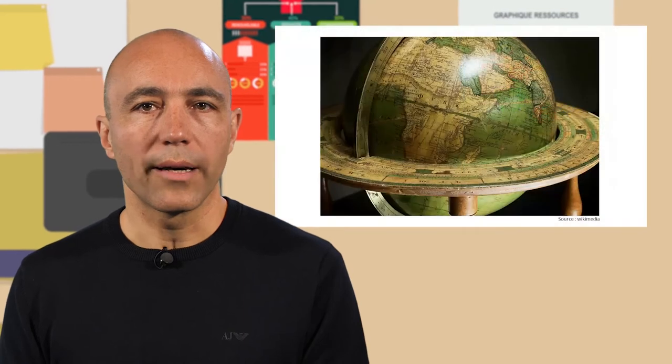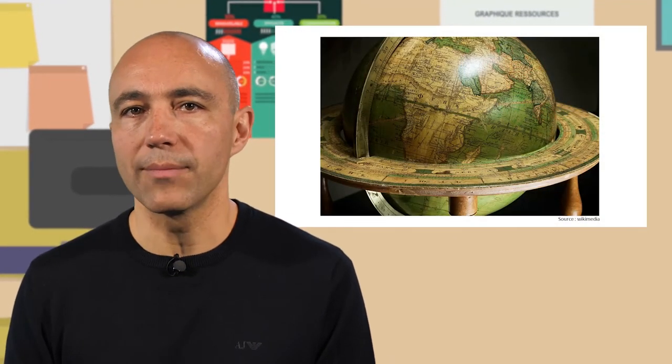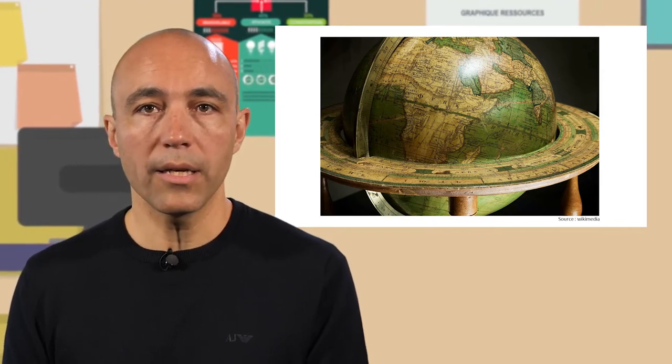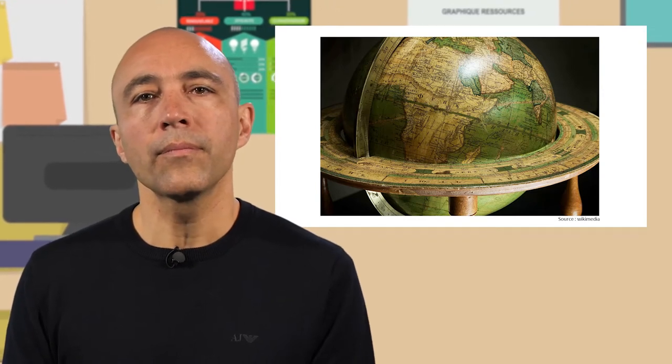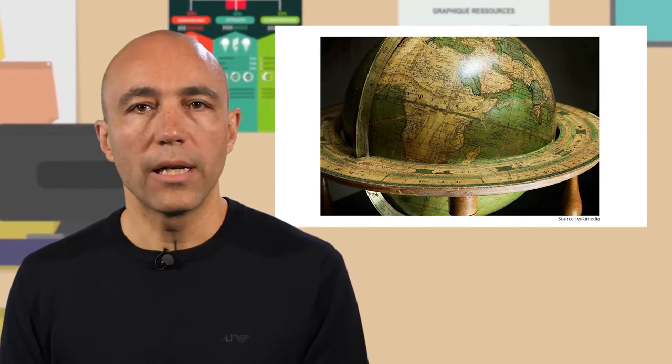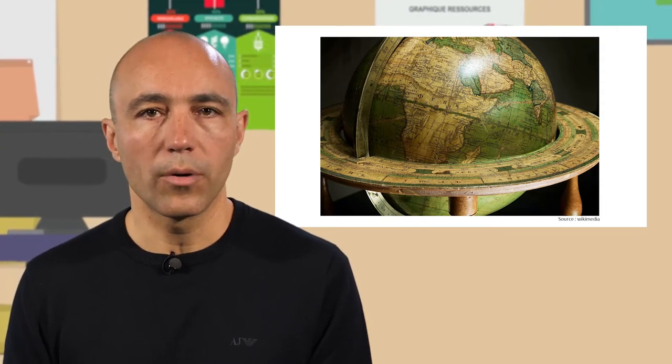Idem dans cette représentation de la Terre, où ne sont représentés ni les nuages, ni les montagnes, ni l'aplatissement des pôles. Du reste, les fuseaux horaires et les méridiens, qui eux y figurent, n'ont pas d'existence réelle. Comme vous pouvez le constater, les deux modèles que nous venons de présenter sont uniquement valables dans des domaines de validité restreints qui leur sont propres.